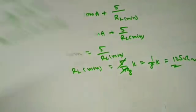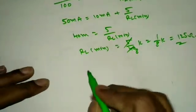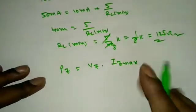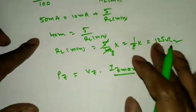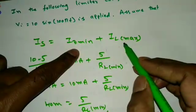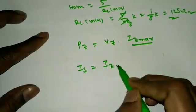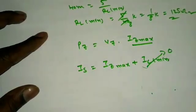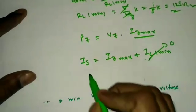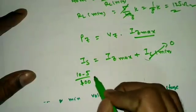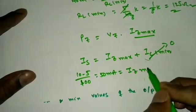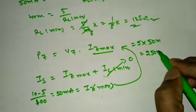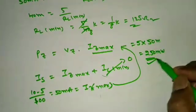Next, finding the minimum power rating of the Zener diode: Pz = Vz × Iz_max. Using Is = Iz_max + IL_min, and IL_min ≈ 0 (nothing specified), Is = 50 mA = Iz_max. Therefore Pz = 5 V × 50 mA = 250 mW. So the answers are RL_min = 125 Ω and minimum power rating = 250 mW.